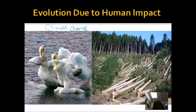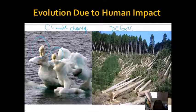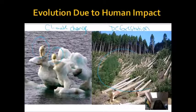Another way humans have impacted the environment is through habitat destruction and deforestation. The organisms that lived in that habitat need to migrate and compete for a new place to live. If they don't, they will die and will not survive long enough to reproduce.